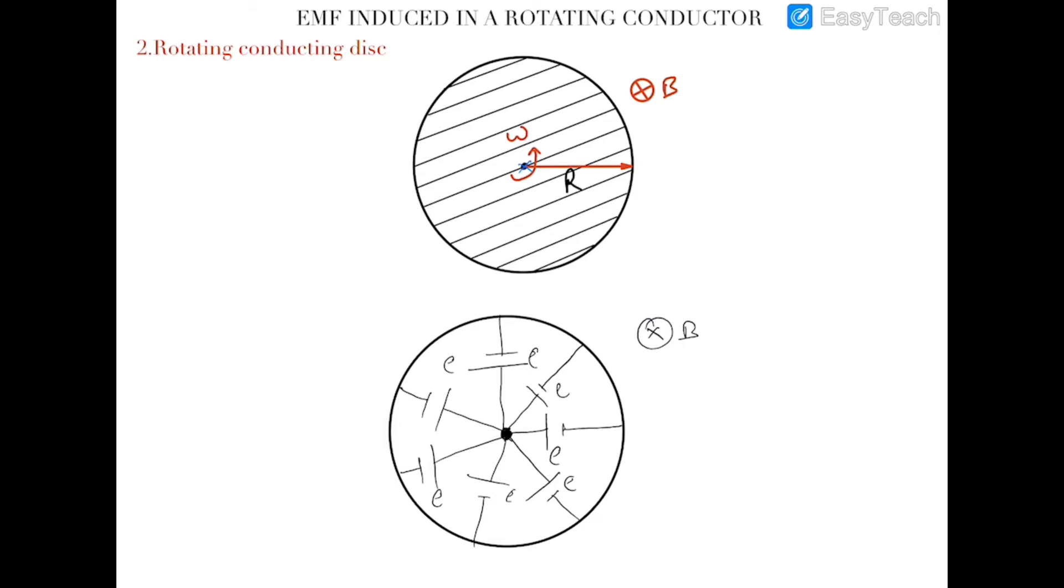Then the EMF induced in all of these rods will be same and that EMF e would be equal to half b omega l square.